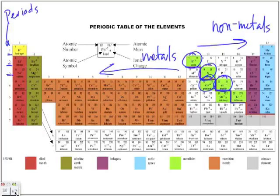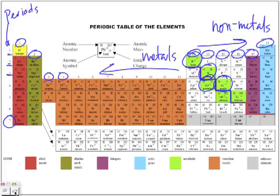There are seven periods or seven rows in the periodic table. The numbers at the top — 1, 2, then skipping to 3, 4, all the way to 13, 14, 15, 16, 17, and the last group, group number 18 — these are the group numbers, one through 18.